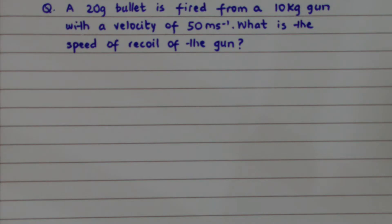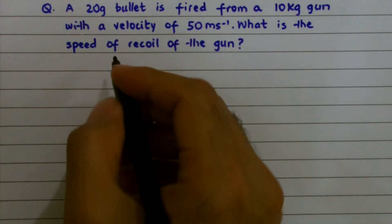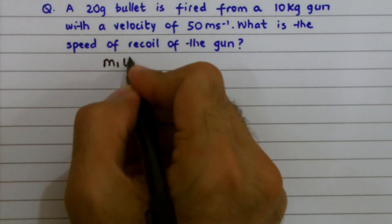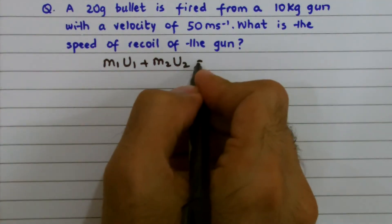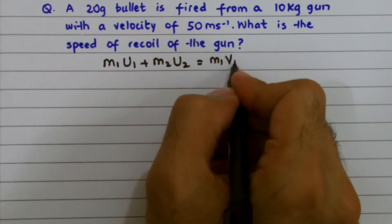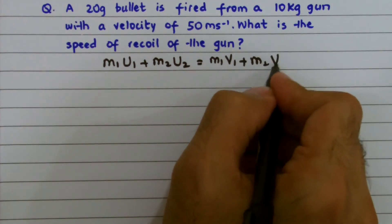According to the law of conservation of momentum, the total momentum before and after collision remains constant for an isolated system. This can be expressed mathematically as M1U1 plus M2U2 equals M1V1 plus M2V2.